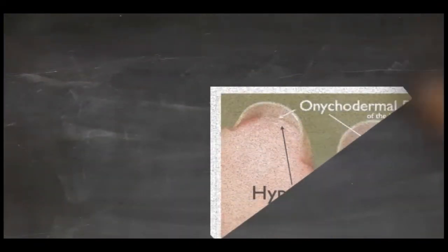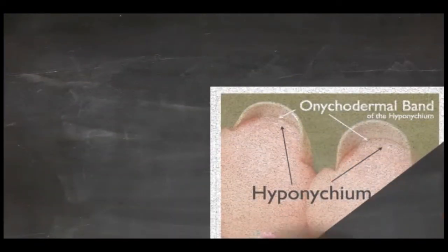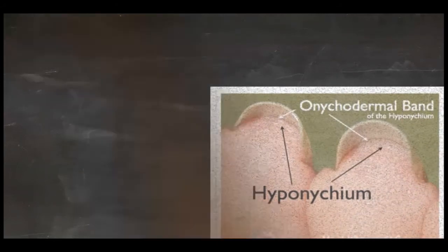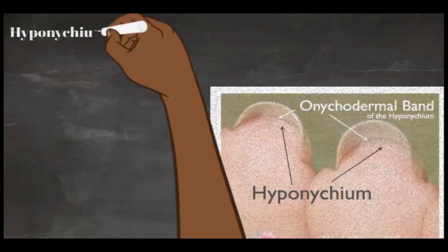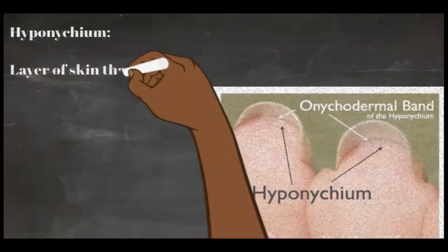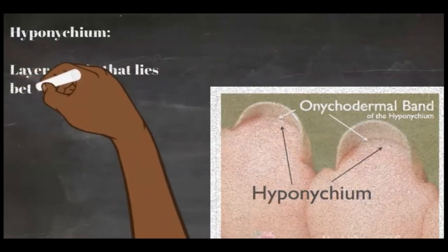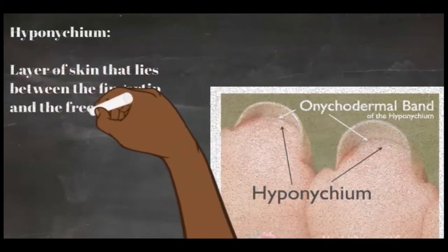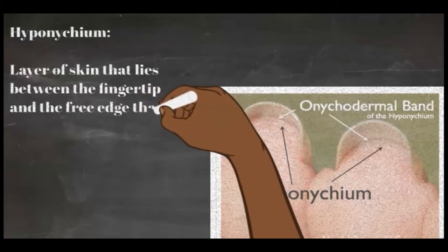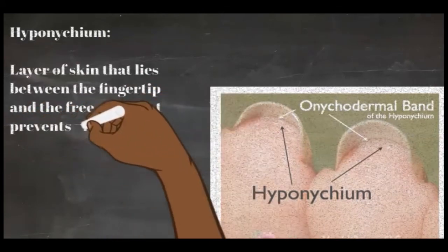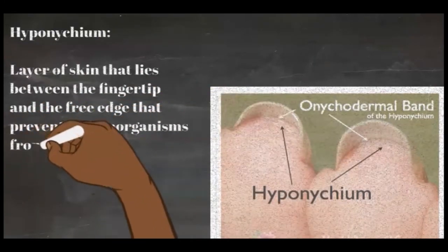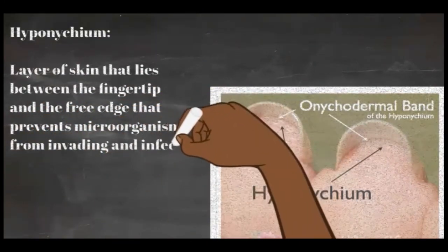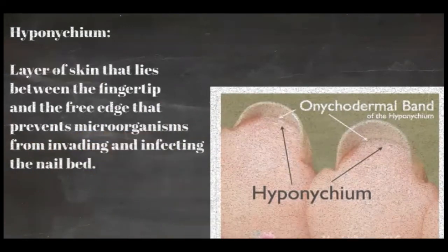The hyponychium is a slightly thickened layer of skin that lies between the fingertip and the free edge of the nail plate. It forms a protective barrier that prevents microorganisms from invading and infecting the nail bed. When this area is damaged, the nail plate can separate from the nail bed, which can make infections under the nail plate more likely to occur — so this area should be treated with care.